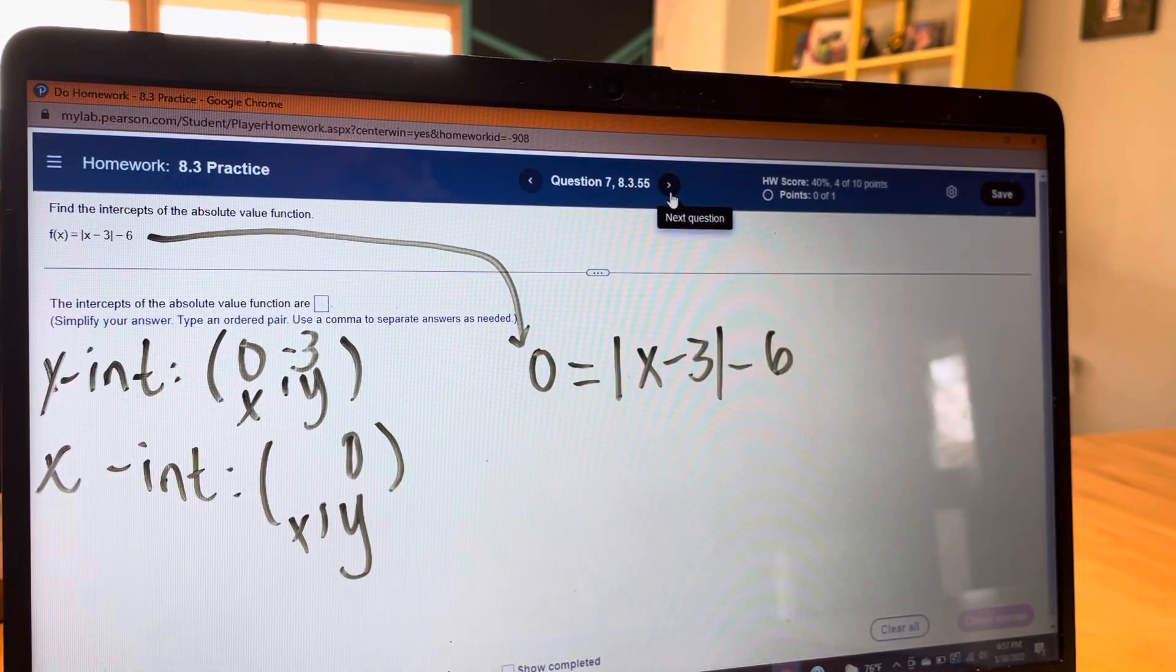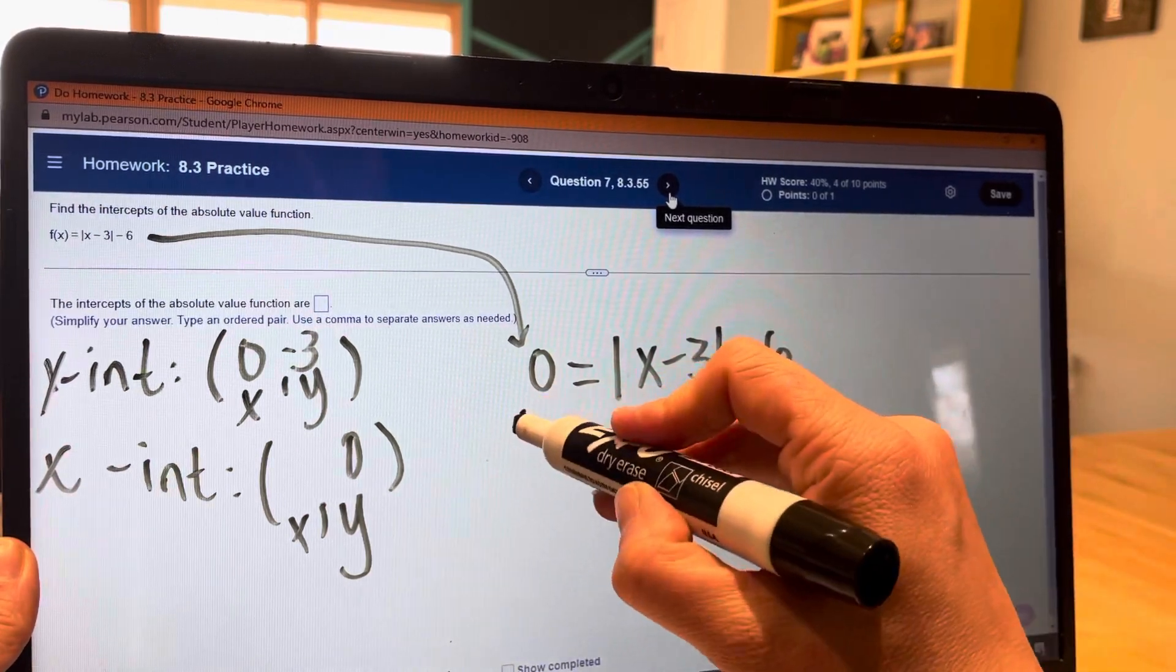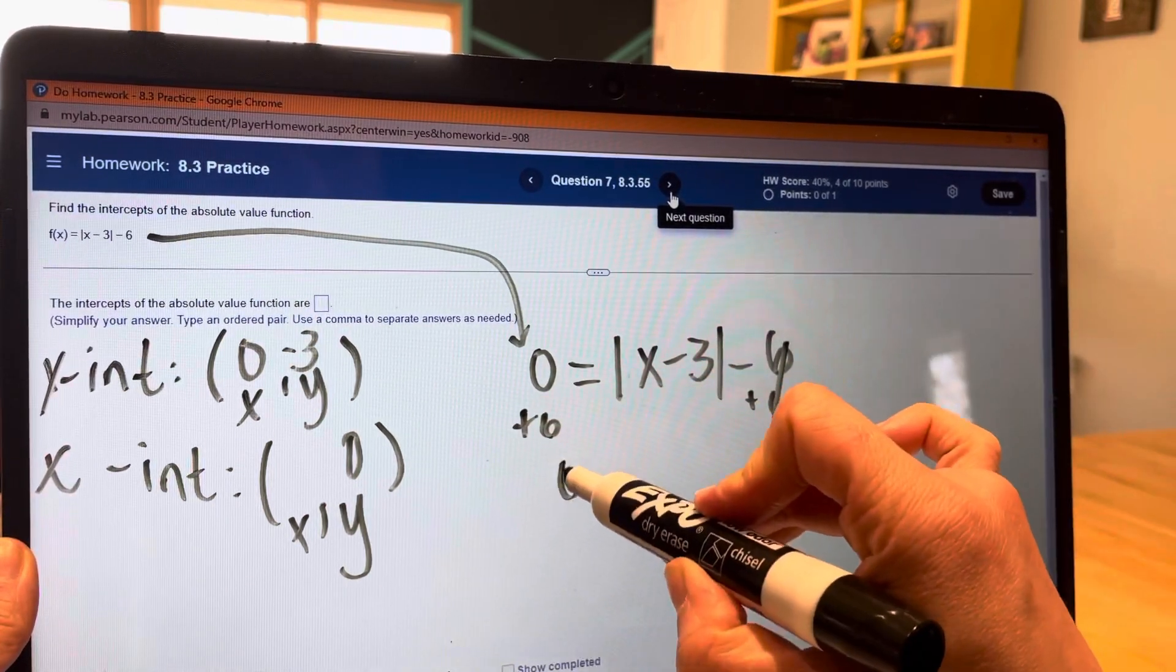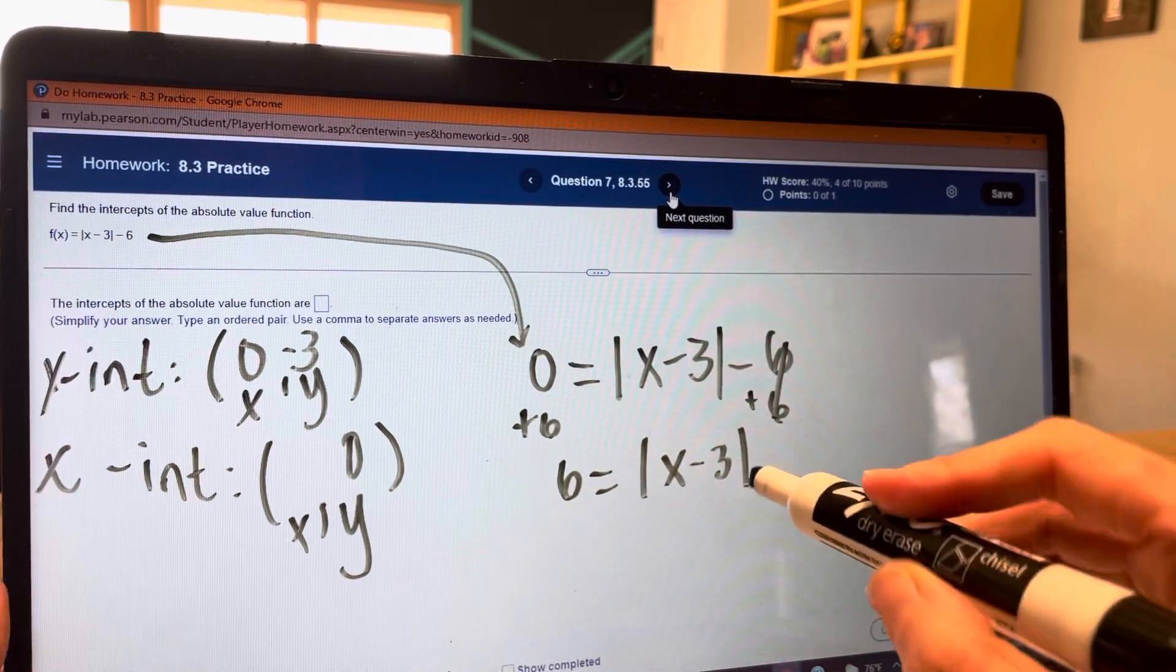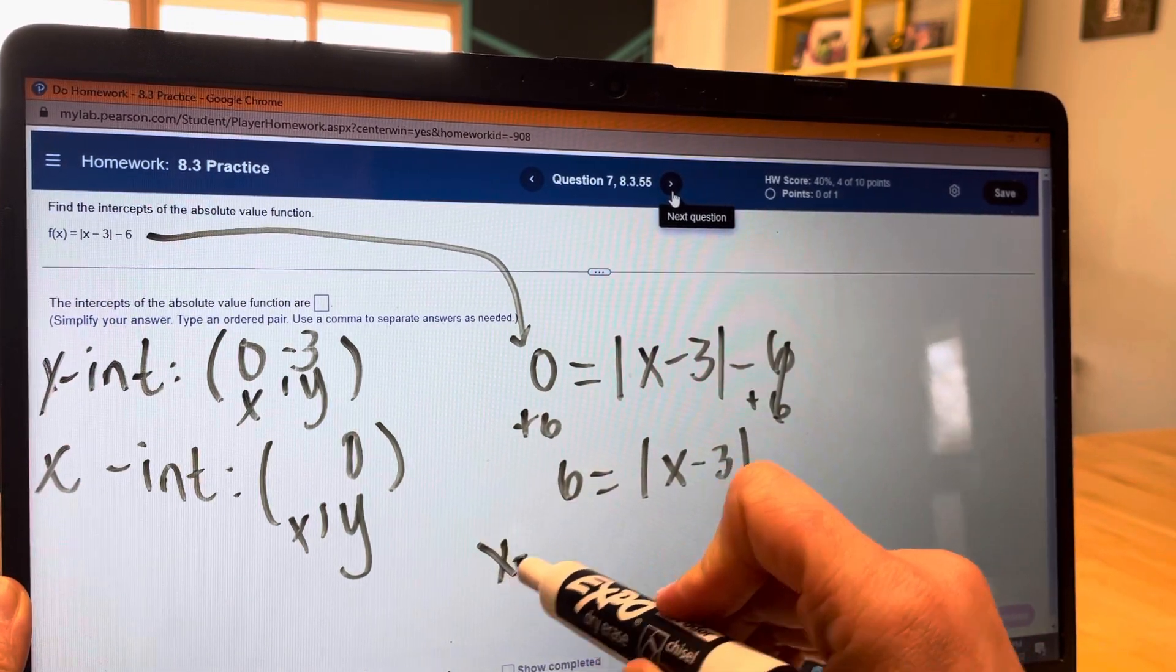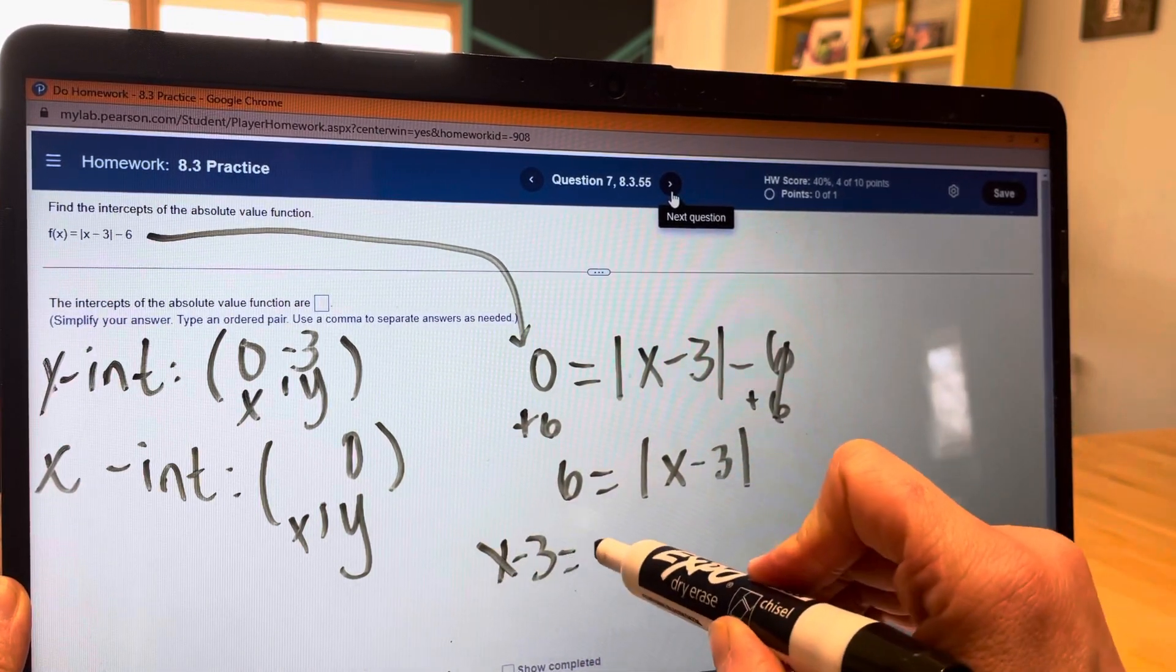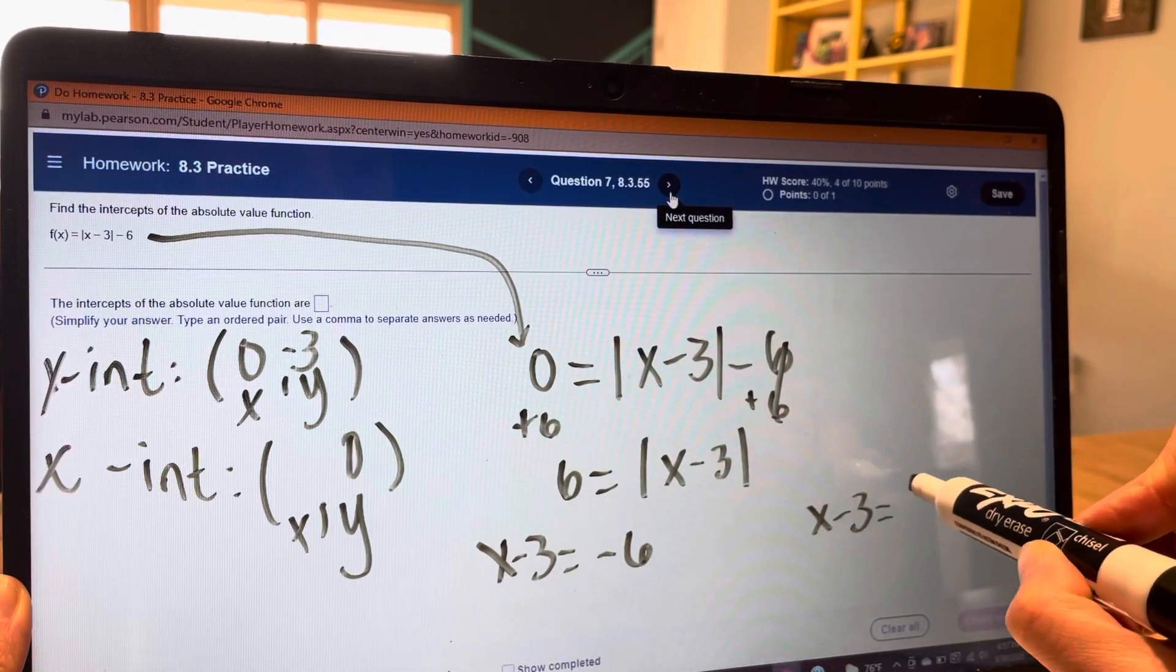This is what we just practiced, solving absolute value equations. So we add 6 to both sides. 6 equals absolute value of x minus 3. Remember, in absolute value equations, you have to split it. So we have x minus 3 equals negative 6, and x minus 3 equals positive 6.